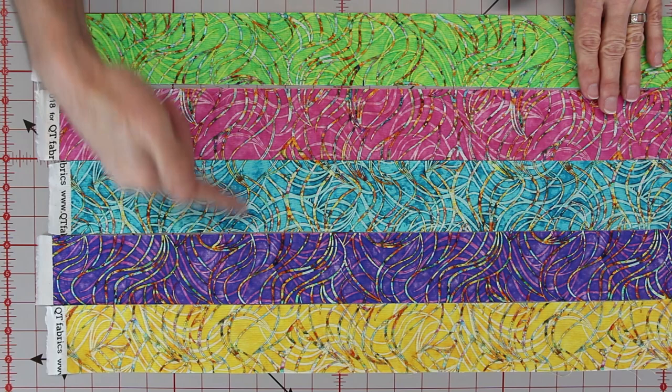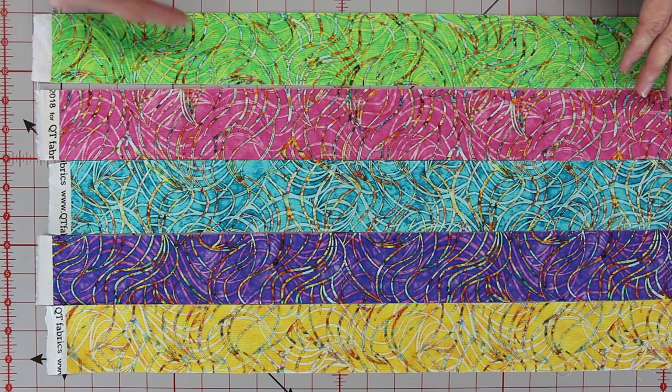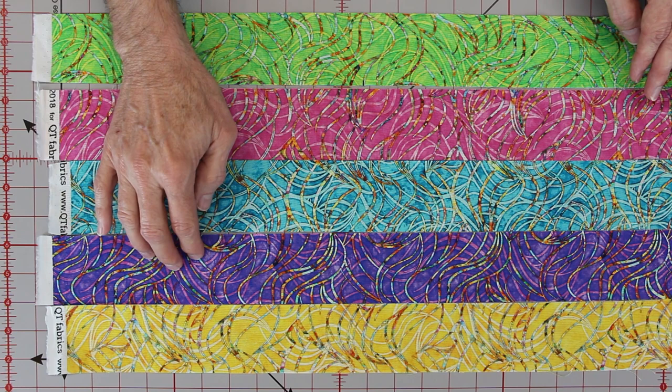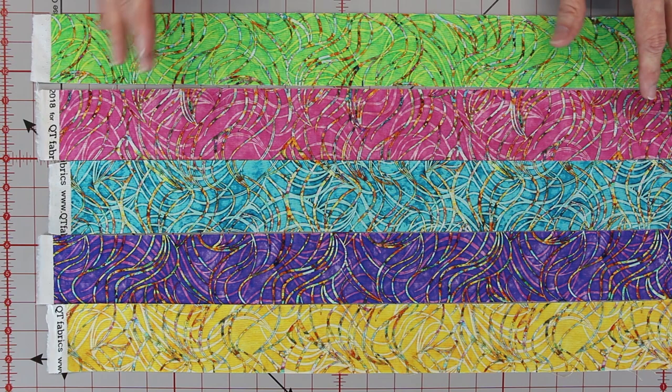So here I've laid out five strips because I'm going to be working on five strips in my rail fence block. Now, I happen to like this fabric line so I stuck within the color range and the color selection within this particular fabric line, but I can move these around to create different effects.